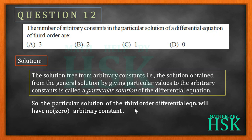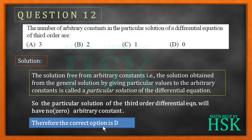The order of a differential equation is meaningless when we talk about the number of arbitrary constants for the particular solution, as it is always going to be zero. Therefore the correct option is D, that is zero.